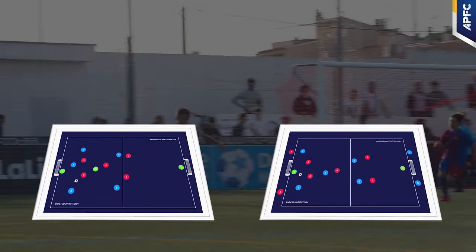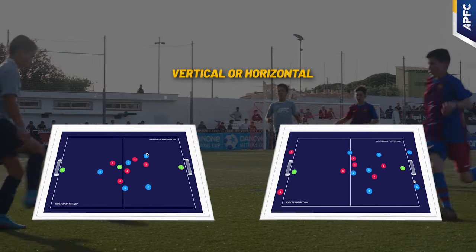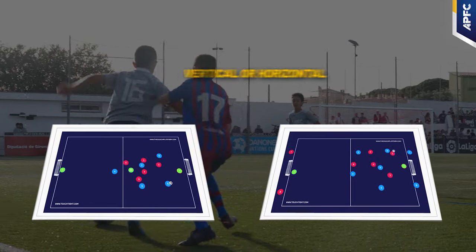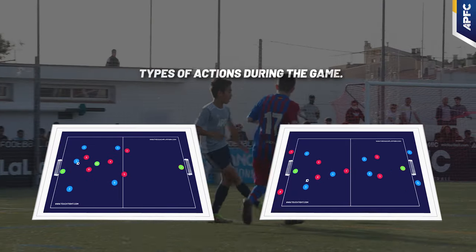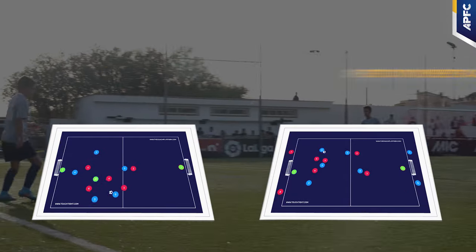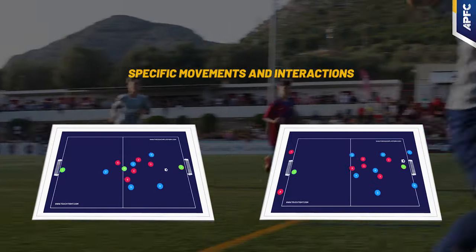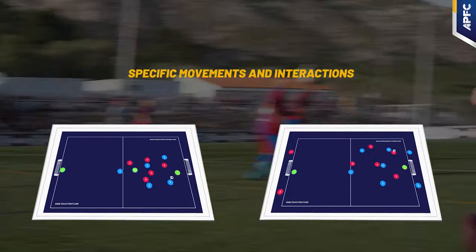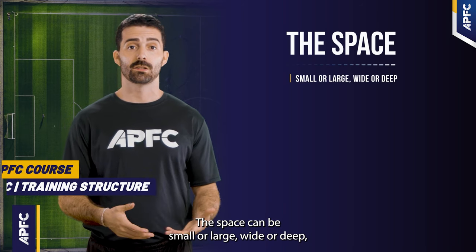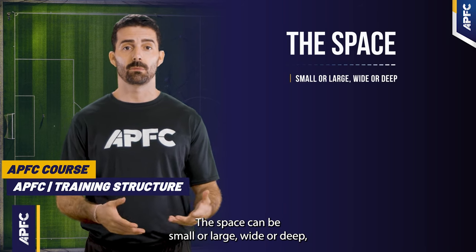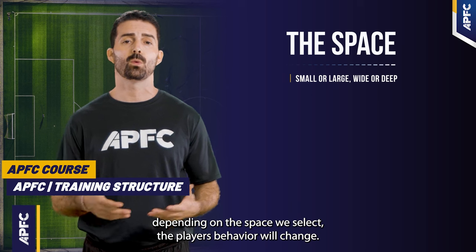Firstly, consider the shape of your SSG. Whether it's vertical or horizontal can significantly influence the types of actions during the game. A well-thought-out shape can encourage specific movements and interactions, adding another layer of strategy and intention. The space can be small or large, wide or deep — and depending on the space we select, the players' behavior will change.